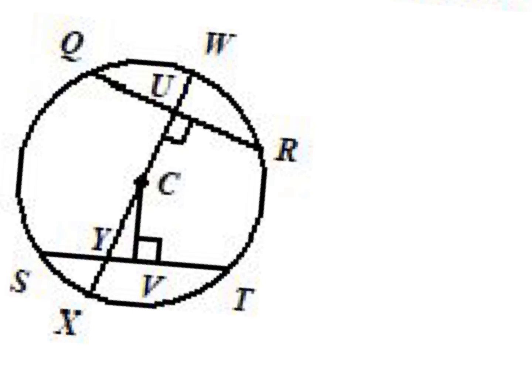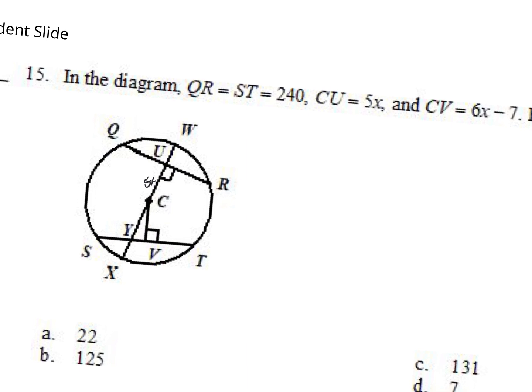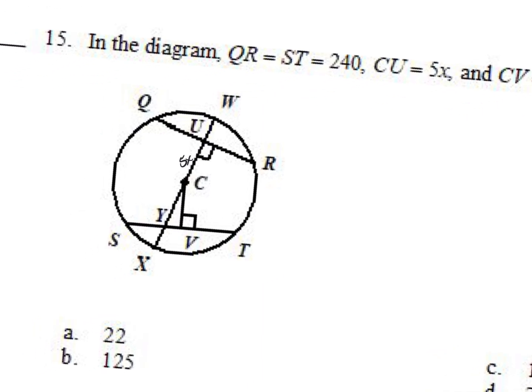We know that CU's distance is 5x. ST equals 240, so we know that this full length is 240.